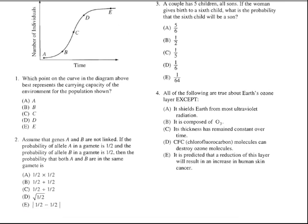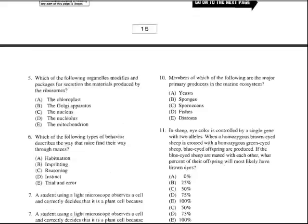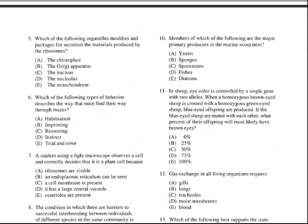Which of the following organelles modifies and packages for secretion the materials produced by the ribosomes? Well, in this one you should know that the Golgi apparatus, or the Golgi complex, is actually responsible for packaging the proteins that are made by the ribosomes, so the answer is B.